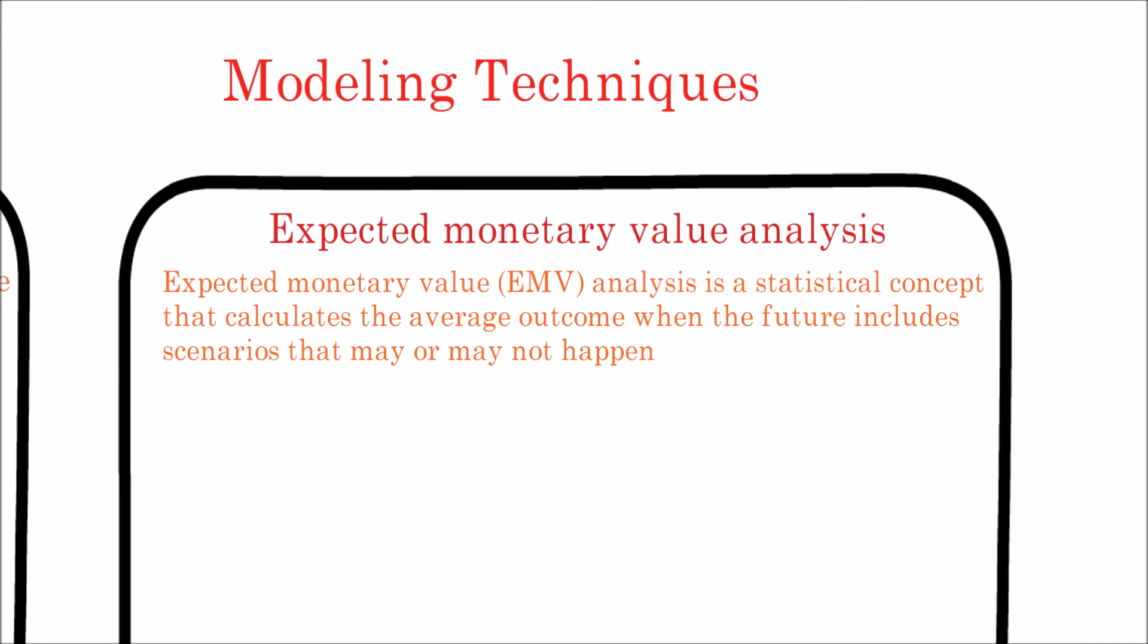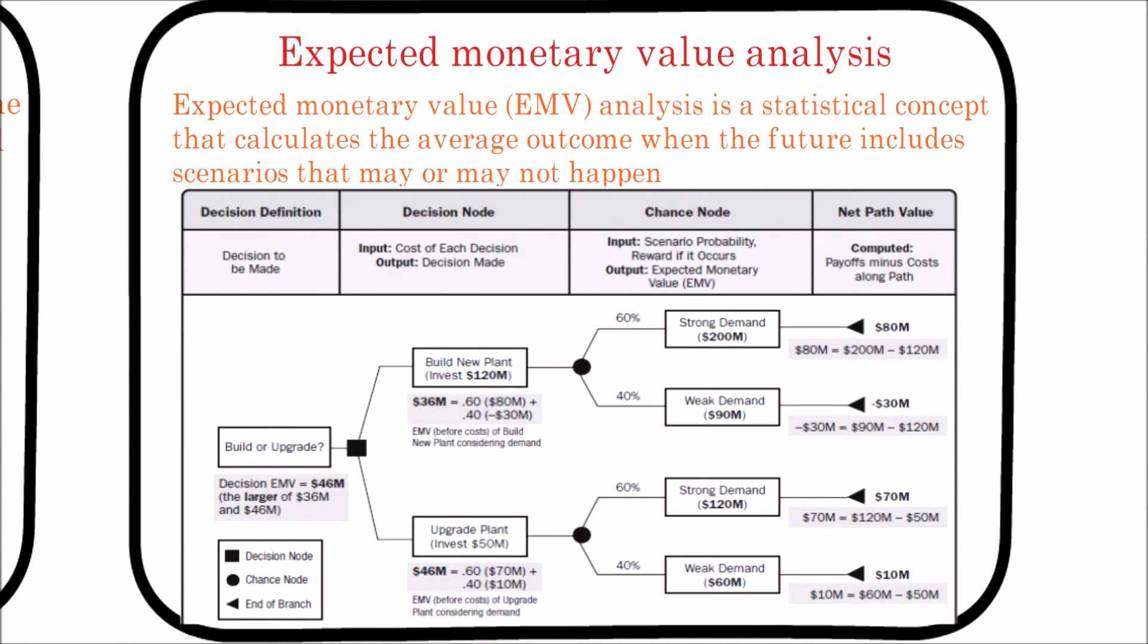A common use of this type of analysis is a decision tree analysis. Here in this example, a decision needs to be made whether to invest 120 million USD to build a new plant or to instead invest only 50 million USD to upgrade the existing plant. For each decision, the demand must be accounted for. For example, strong demand leads to 200 million USD revenue within new plant but only 120 million USD for the upgraded plant, perhaps due to capacity limitations of the upgraded plant. The end of each branch shows the net effect of the payoffs minus costs. For each decision branch, all effects are added to determine the overall expected monetary value of the decision.